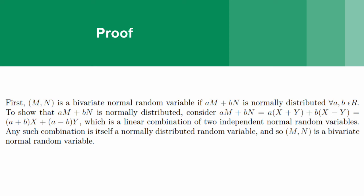We plug in the values for m, which was x plus y, and the value for n, which was x minus y. And just doing a little bit of rearranging, we get a plus b times x, and a minus b times y. Now this is a linear combination of two independent normal random variables, and any such combination is itself a normally distributed random variable.